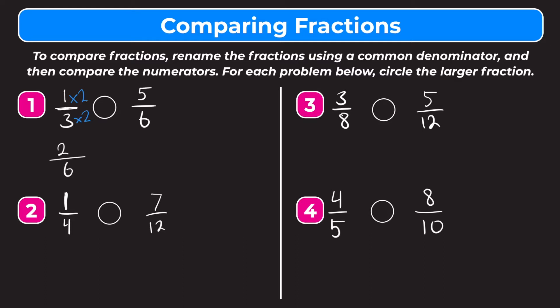Since five-sixths is already over six, we can just bring it down — five-sixths — and now we can compare the numerators. Five is obviously larger than two, so five-sixths is larger than two-sixths. So that also means that five-sixths is larger than one-third, so one-third is less than five-sixths. Circle five-sixths, and that's your answer.